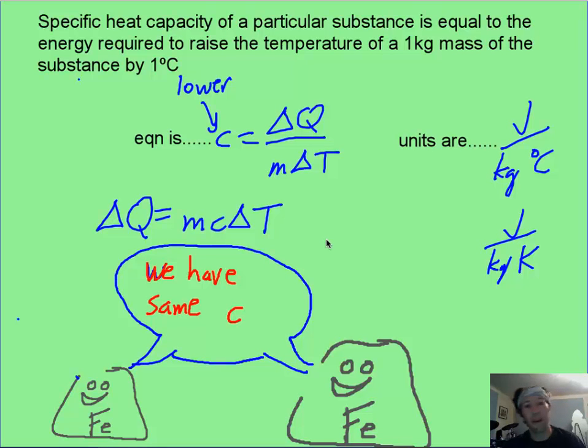Now, specific heat capacity is going to depend only on the type of element or compound or alloy that you have. For example, we've got our two friends, the blobs of iron, Mr. Small and Mr. Big, and they say, we have the same specific heat capacity because they are both made of iron. It doesn't matter what their mass is.